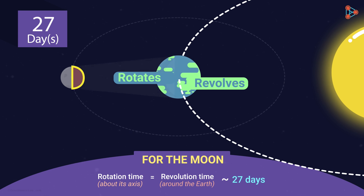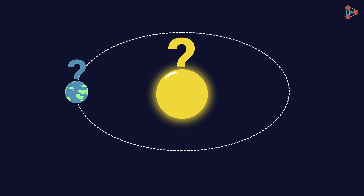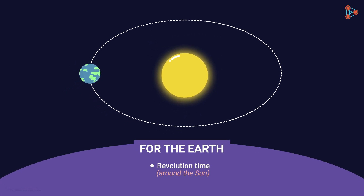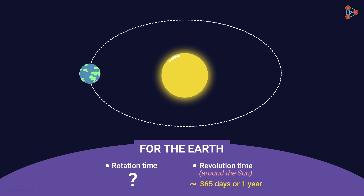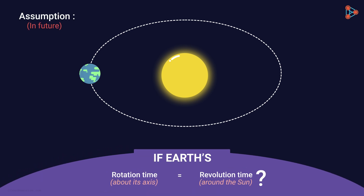So now we know why the earth doesn't trust the moon. But what about the earth and the sun — is the same concept applicable for them as well? No. We know that the earth completes one revolution around the sun in approximately 365 days, and its rotation time is one day or 24 hours. So it is clear that from the sun, both sides of the earth would be visible. But what if at some point in the future, earth's rotation time equals its revolution time? If this happens, only one side of the earth will be exposed to the sun, while the other side will forever be in darkness.